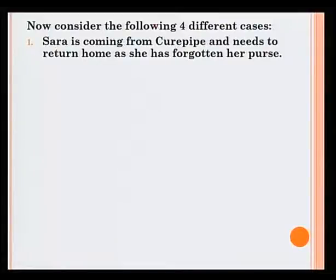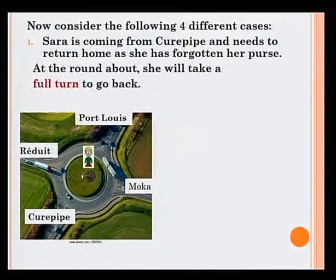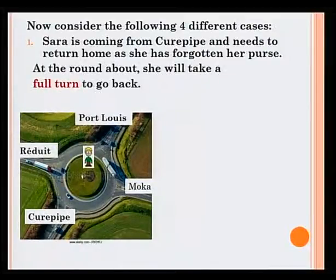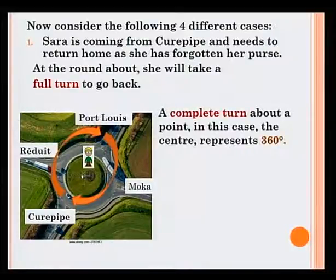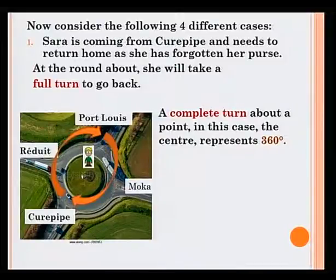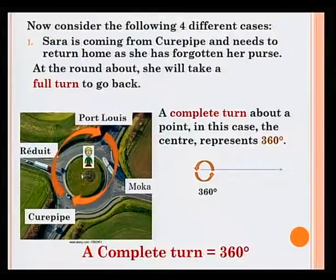Sarah is coming from Q-Pip and needs to return home as she has forgotten her purse. At the roundabout, she will take a full turn to go back. A complete turn about a point — in this case, where Peter is standing, which we call the center — represents 360 degrees. A complete turn is equal to 360 degrees.